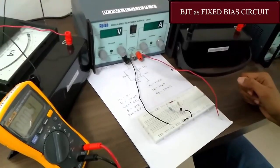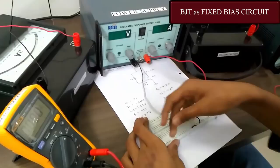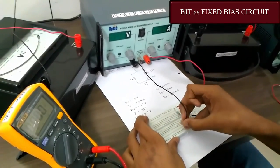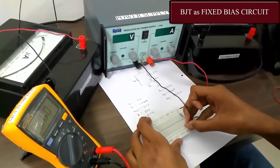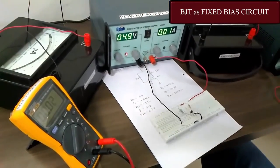Now let us give the power supply. This is the positive terminal. This is ground. The power supply is set at 5 volts.